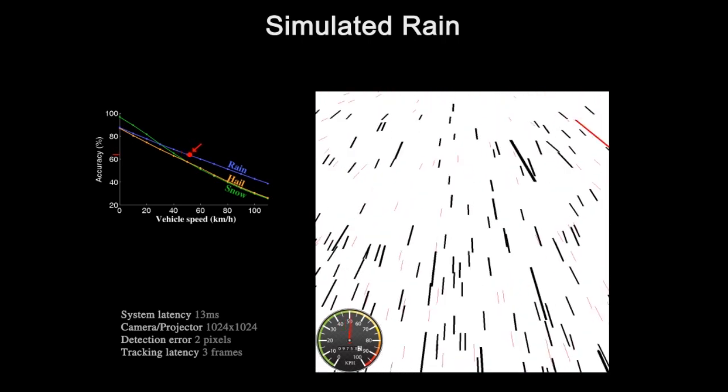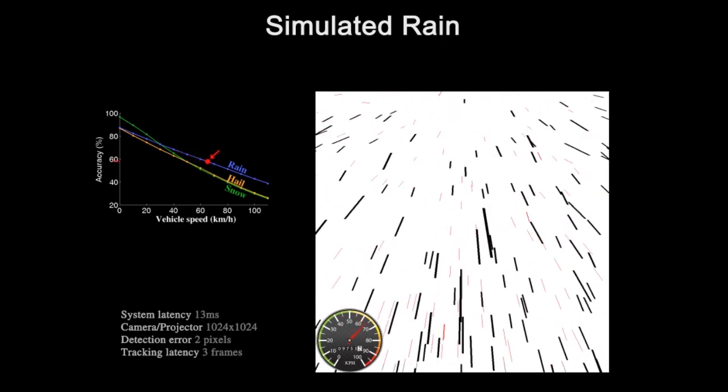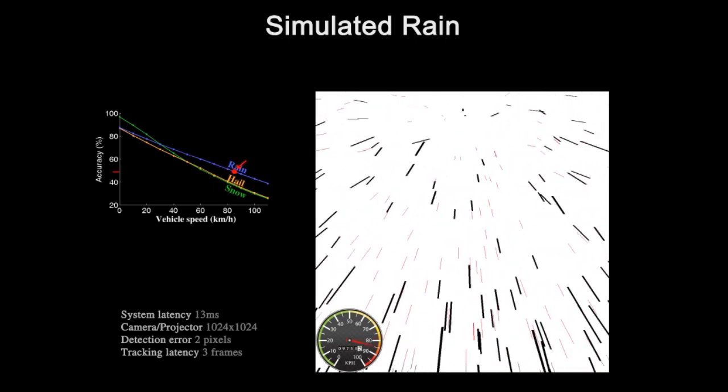At very high speeds, our system is still capable of not illuminating many of the drops, while still maintaining high light throughput.